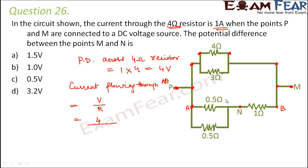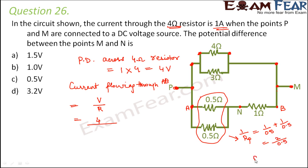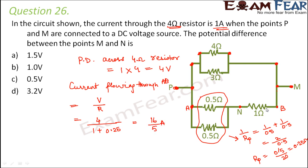The two resistances of 0.5 ohms and 0.5 ohms are in parallel. Their parallel resistance: 1/R_parallel = 1/0.5 + 1/0.5 = 2/0.5, so R_parallel = 0.5/2 = 0.25 ohms. Here it is 0.25 ohms and there is also 1 ohm in series. So the net resistance between points A and B equals 1 + 0.25 = 1.25 ohms. The current through AB equals 4/1.25, which gives 16/5 amperes.